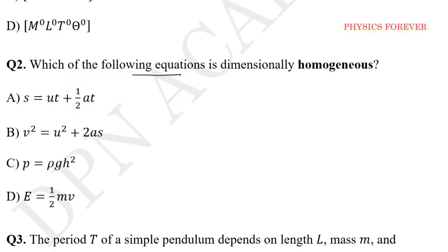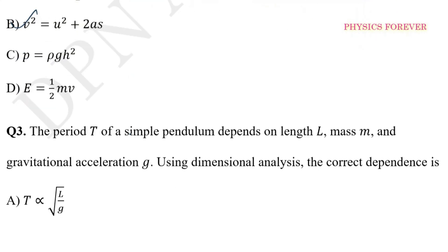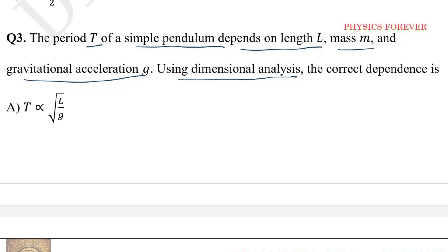Which of the following equations is dimensionally homogeneous? That is the important concept — this is the dimensionally homogeneous condition. The period T of a simple pendulum depends on length L, mass M, and gravitational acceleration G. Then, using Dimensional Analysis, the correct dependency is?